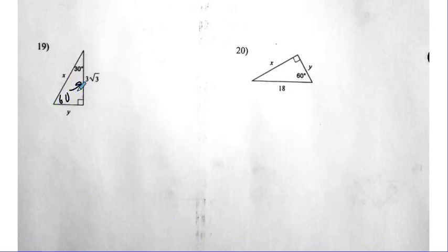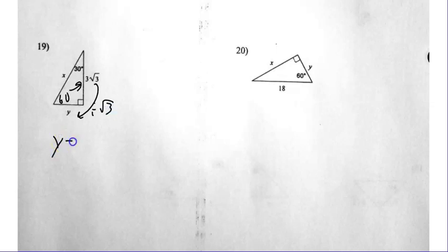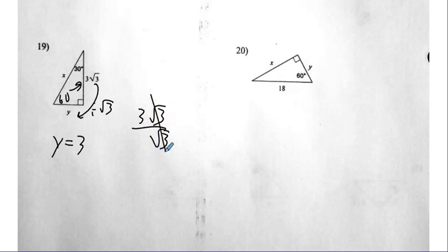Number nineteen — I have the long leg, but nicely it's radical three. So when I divide by radical three it's just going to cancel. So when I do three radical three divided by radical three, I get three. And how do I go from the short leg to the hypotenuse? Just double it. So X is six.